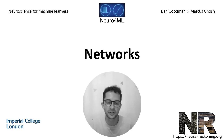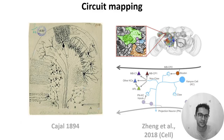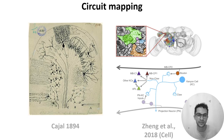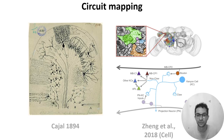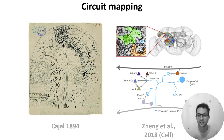First, how do neuroscientists map biological circuits? Broadly, you need to dissect out an animal's brain, slice it very thinly, stain it, view it under a microscope, and then analyze the images. Historically this was all done by hand, like this drawing from Cajal in 1894, but everything from data acquisition to analysis is being automated — it's an exciting space to watch.